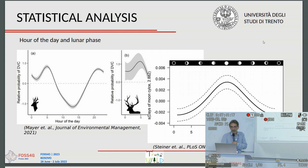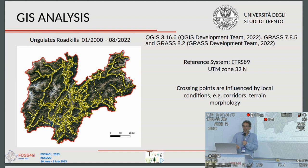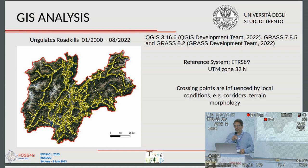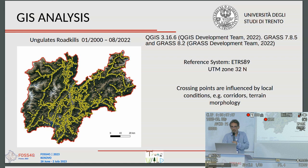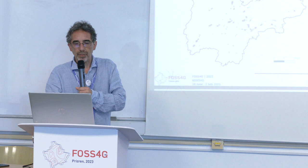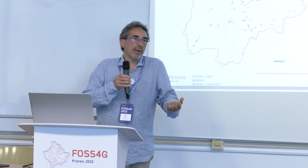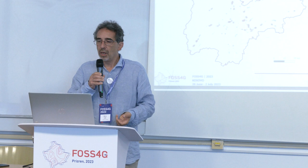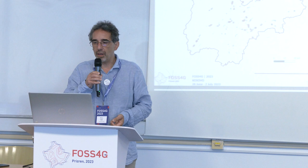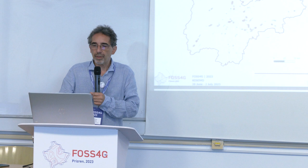Looking at the road kills map, they are quite spread all over the area — all main roads are affected. Crossing points are influenced by local conditions, corridors, morphology, and so on, making it a complicated situation. This covers the period from 2000 to 2022. A simple first step is highlighting hotspots using heat maps — a kernel density estimation with a radius of 1,450 map units, which was considered the best option.